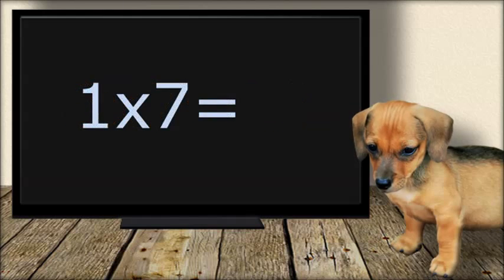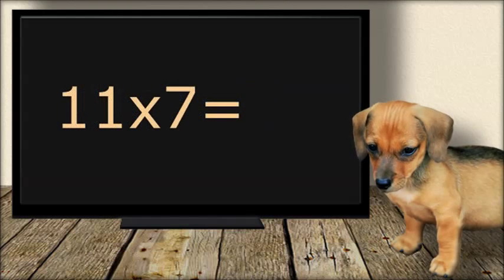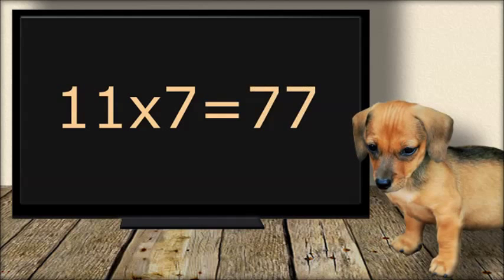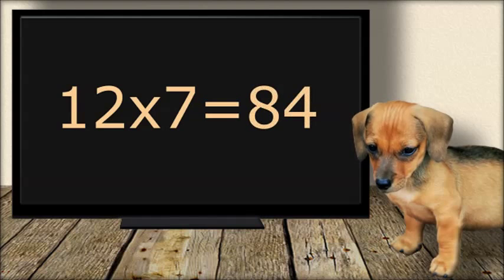1 times 7 equals 7. 11 times 7 equals 77. 12 times 7 equals 84. The End.